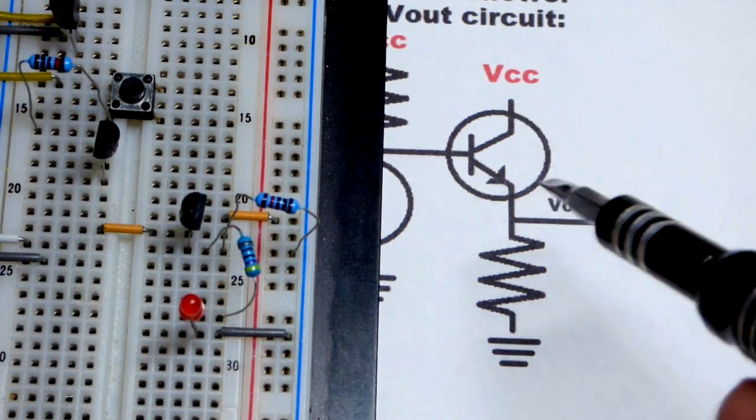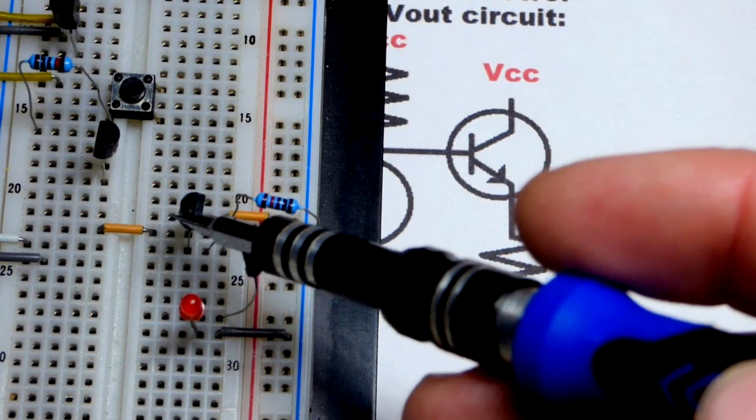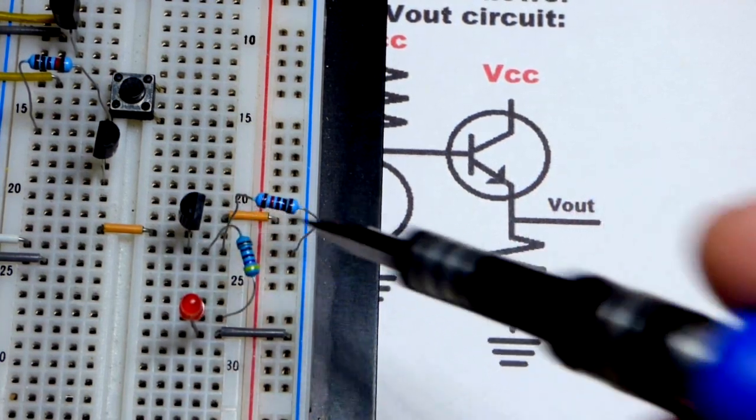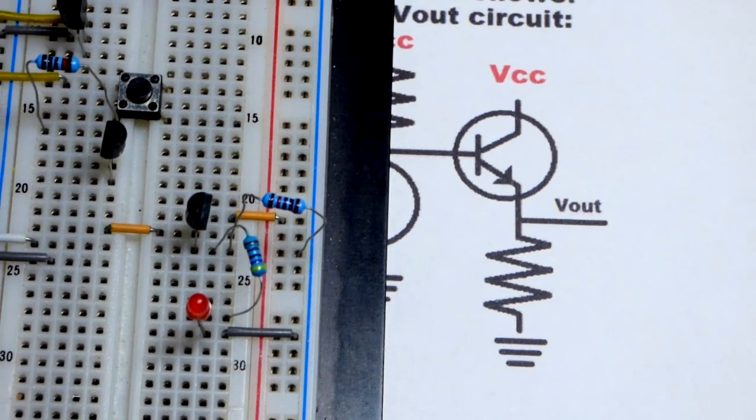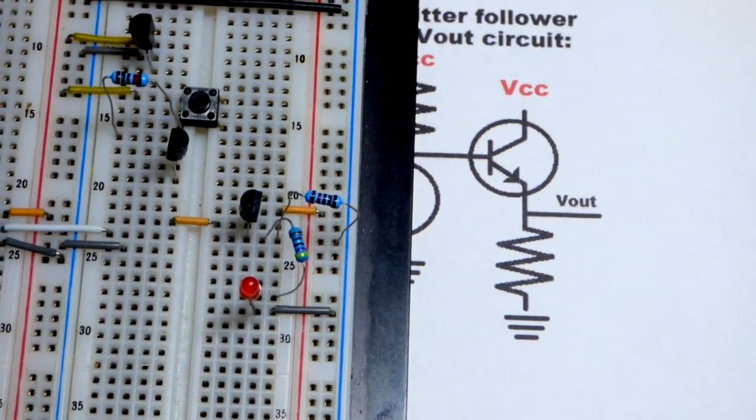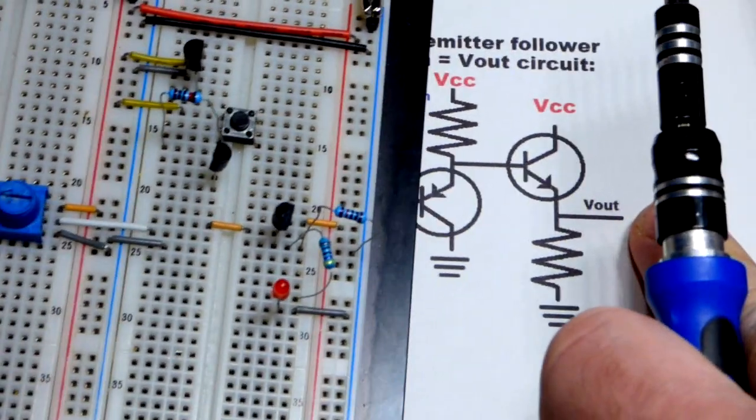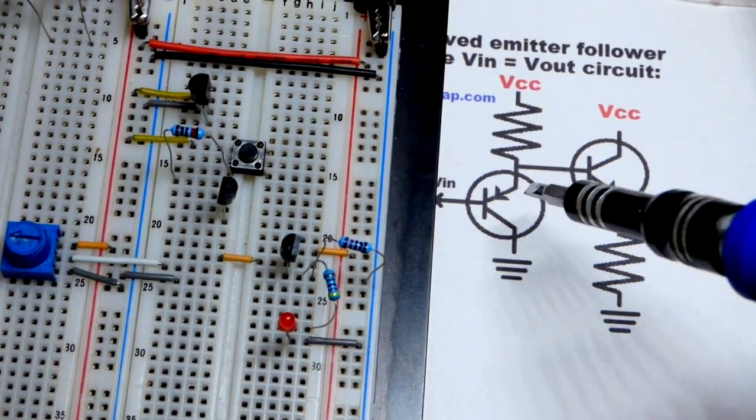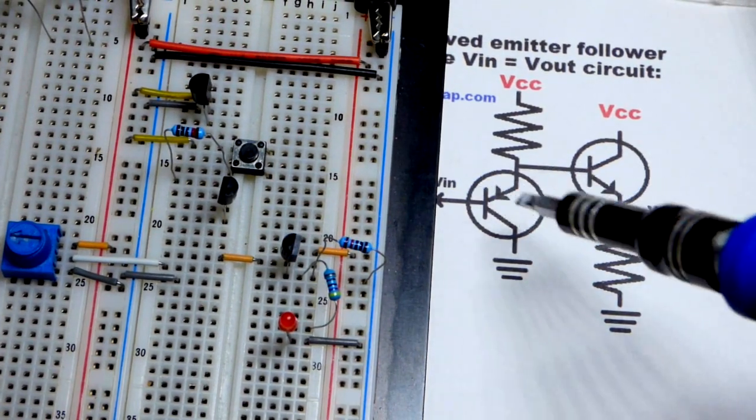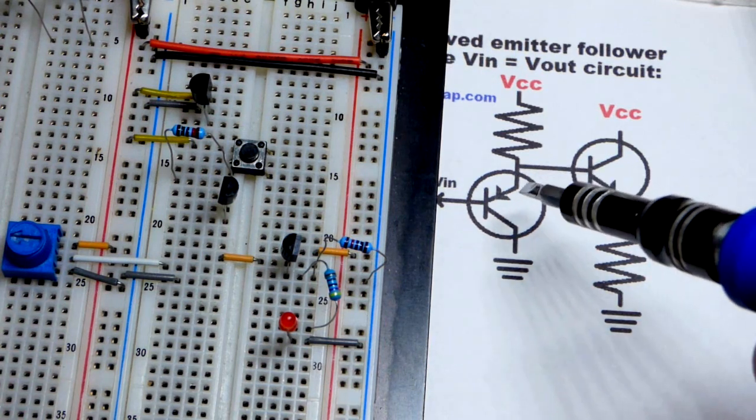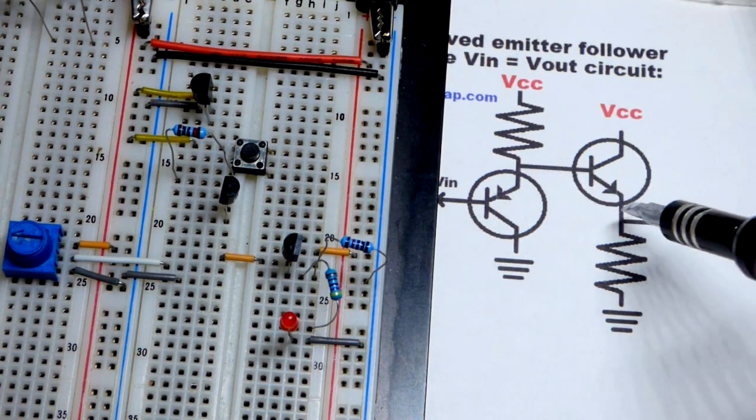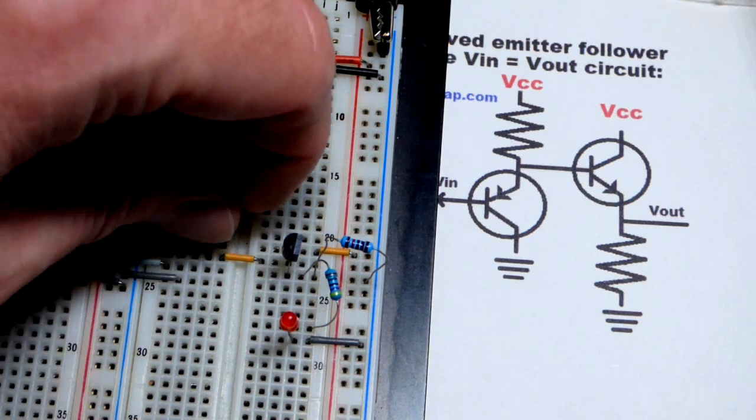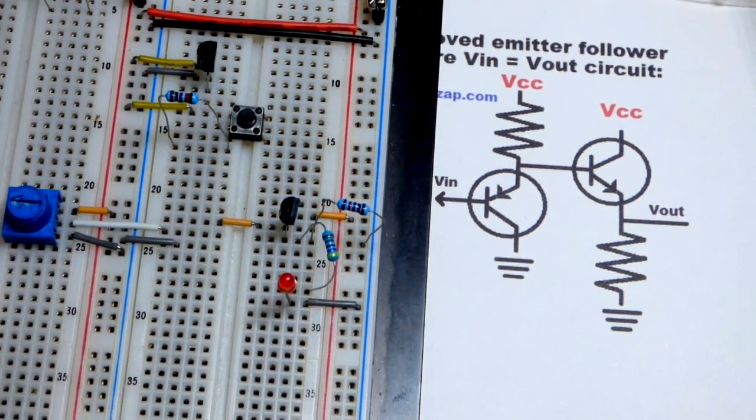That's already an emitter follower - the voltage we give to the base will be the voltage at the output minus 0.6 volts. We don't want to deal with that 0.6 volts, so what we're going to do is put a PNP bipolar junction transistor emitter follower in front of it, which will raise the voltage 0.6 volts and then it'll drop back down. They'll cancel each other out.